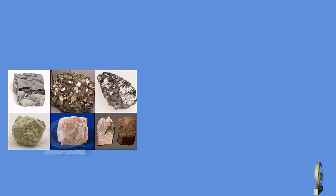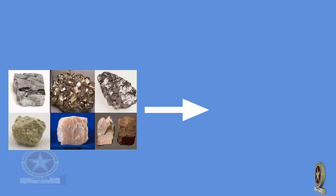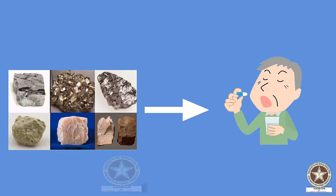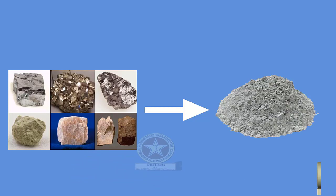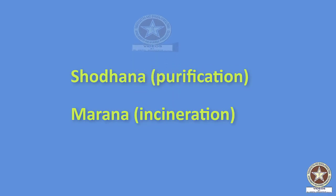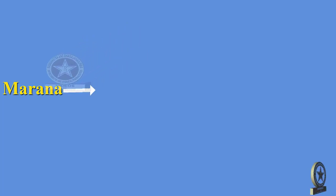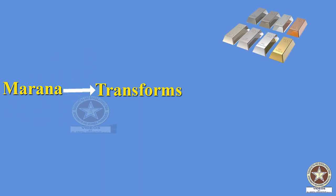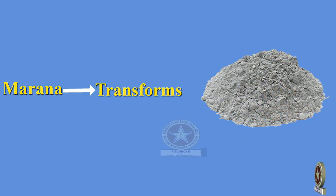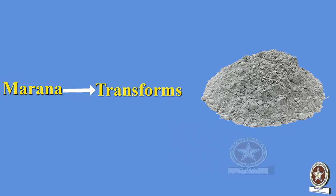Metals and minerals in general cannot or should not be used in their natural forms as medicament for internal use. They have to be converted into bodily absorbable forms. This can be achieved through procedures such as Shodhana, Marana, etc. Marana or Bhasmikarana is a procedure which helps to convert raw materials like metals, minerals, gems, etc. into microfine, tasteless, and absorbable powder form which can be prescribed as medicine.